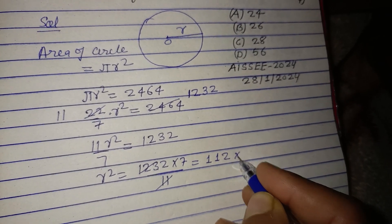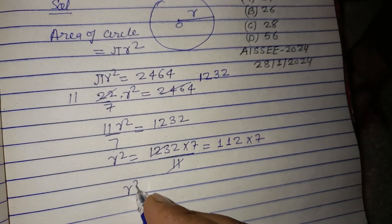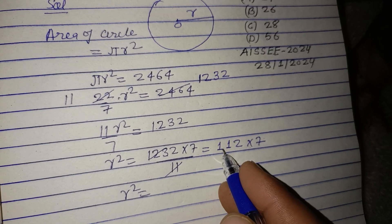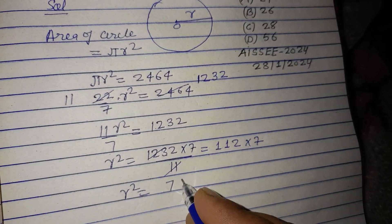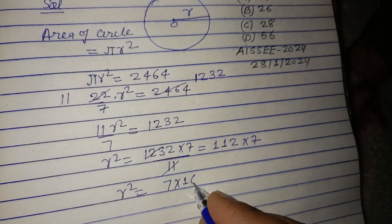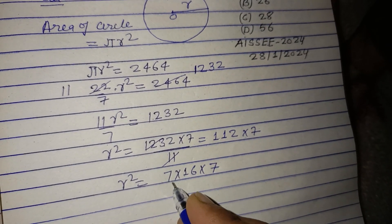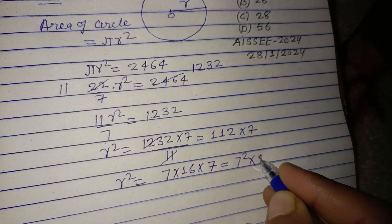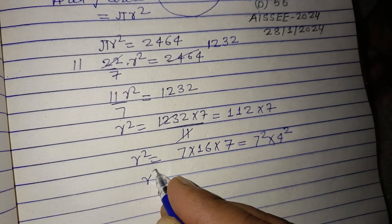Now we factorize this. 7 times 7 equals 49. 7 times 6 is 42, so this is 7 times 7, which is 7². 16 is the whole square of 4, so r² equals 7² times 4².